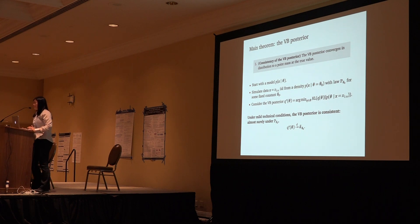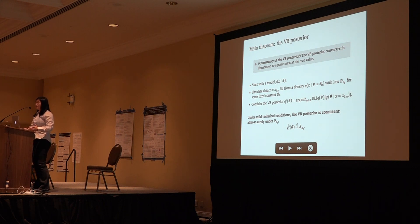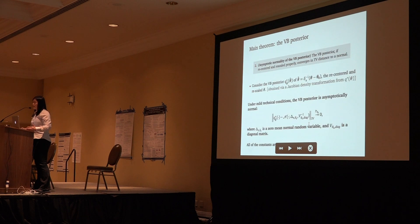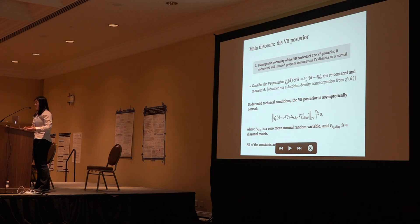Going to the main statements of our theorem: for consistency of the variational Bayes posterior, we start with the model P given theta, where P is the data and theta is the latent variable. We simulate data IID from its density by fixing the latent variable at the true value theta zero, and consider the variational Bayes posterior by minimizing the KL divergence between our approximation and the exact posterior. Under the mild technical conditions just mentioned, the variational Bayes posterior is consistent, converging to a point mass at the true value. We can also establish asymptotic normality by considering a slightly transformed version of the latent variable — recentered at the truth and rescaled by the proper rate — and the total variation between this variational Bayes posterior and a normal distribution will converge to zero in probability.